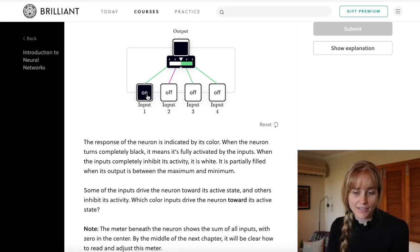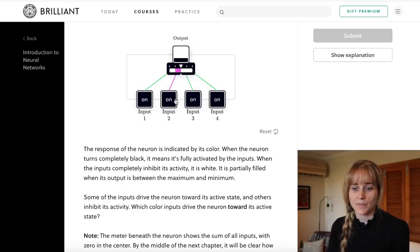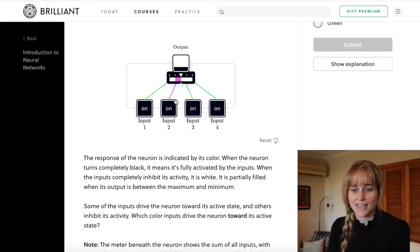Some of these inputs are increasing the activation and those are the ones in green, and the one in pink is decreasing its activation. See, if I turn them all on and then turn the pink one on, it actually goes down. So inputs can either be positive or negative in that sense.